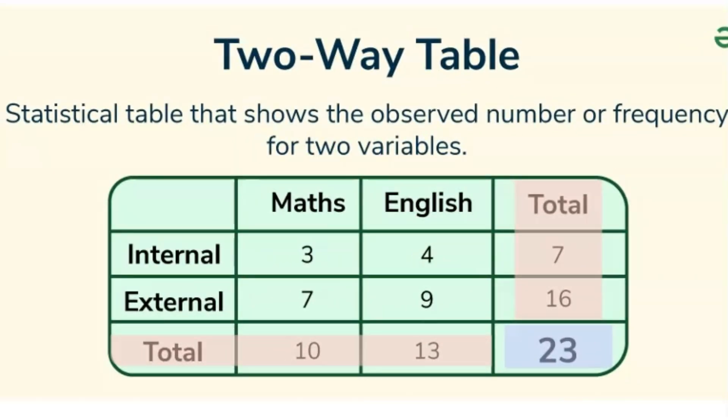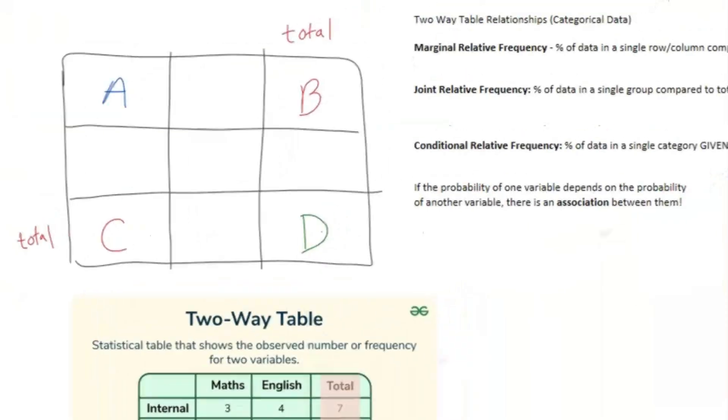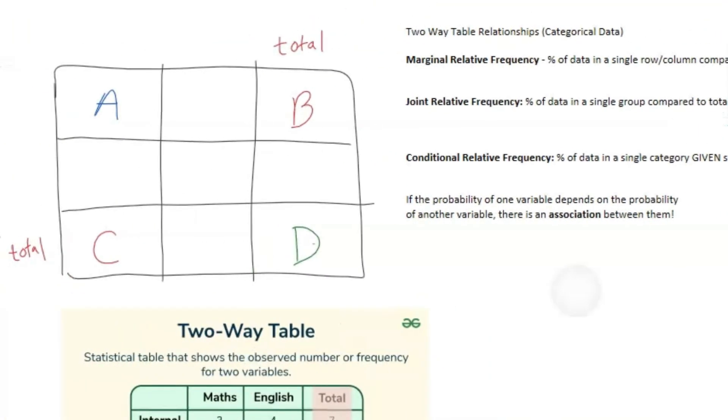So you can see here, we have math students - we have 10 math students, but then we also have the internal and external variables that split up the number of math students. So we have three math students who are internal, seven students who are external, and the same case for English.